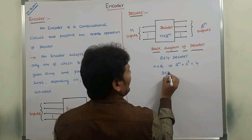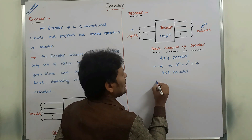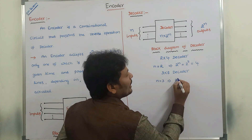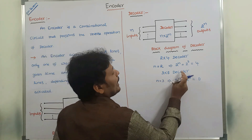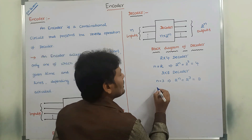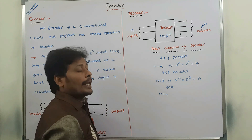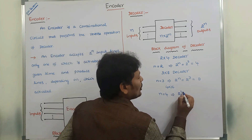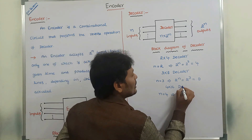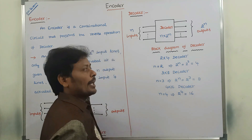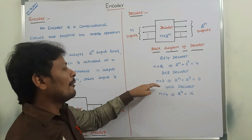In the same way, this is a 3 by 8 decoder. Here n is equal to 3, it produces 2 power 3, that is equal to 8 outputs. Hence, the name is 3 by 8 decoder. In the same way, 4 by 16 decoder — here n value is equal to 4. The decoder can accept 4 inputs and it produces 2 power 4, that is 16 outputs. Hence, it can be called as 4 by 16 decoder. These are the commonly used decoders: 2 by 4, 3 by 8, and 4 by 16 decoder.